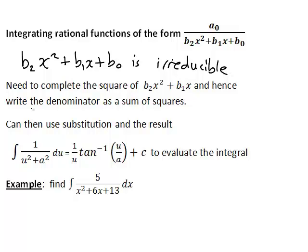The general process we are going to use is to first complete the square on the b₂x² plus b₁x part of this expression on the denominator. And from that we are going to write the denominator as the sum of squares.